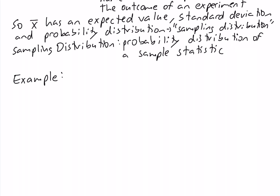Now let's take a look at an example. Suppose we have a population of size 5, and the five elements in our population have values 2, 8, 6, 10, and 4. We want to take a sample of size 2.